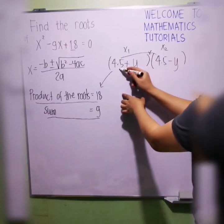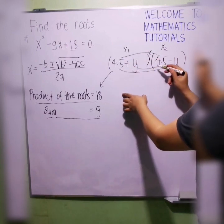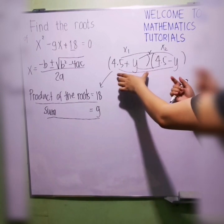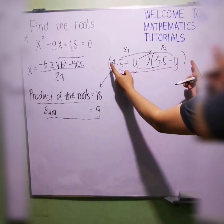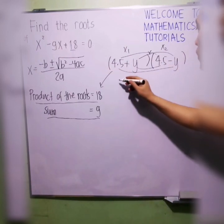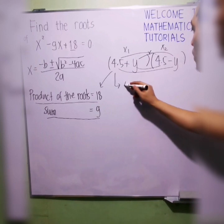We will multiply this using FOIL method. First term, outer term, inner term, then last term. But as we all know, this is a special case where almost everything is the same except the middle sign. This will now result into difference of two squares.